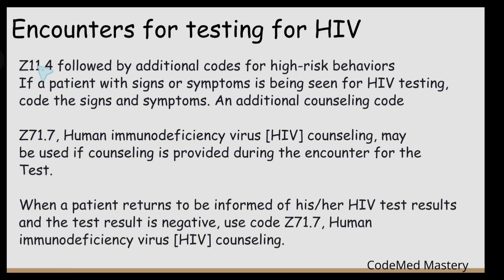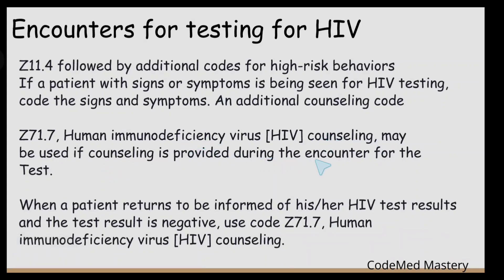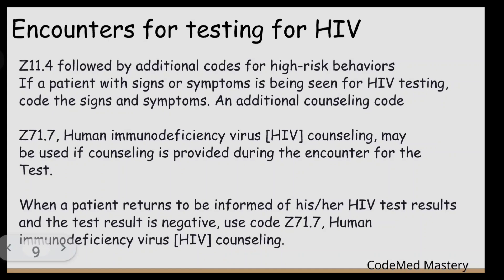The next guideline covers encounters for testing of HIV. For a patient being tested for HIV, we use code Z11.4 followed by an additional code for high-risk behaviors. Code Z71.7 is used if counseling is provided during the encounter. When a patient returns to be informed of HIV test results and the result is negative, we also use code Z71.7 for HIV counseling.